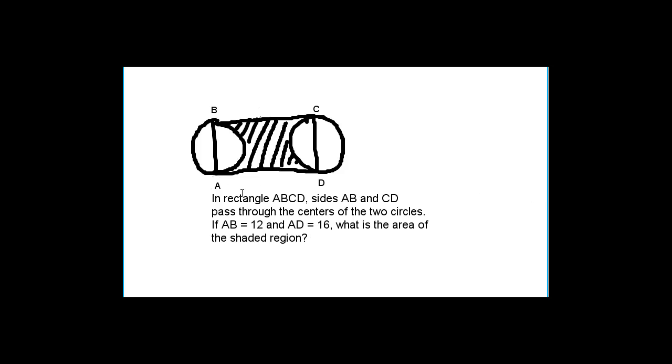In rectangle ABCD, sides AB and CD pass through the centers of the two circles. If AB equals 12 and AD equals 16, what is the area of the shaded region? If you'd like to work on this question on your own, push pause right now and give it a shot.